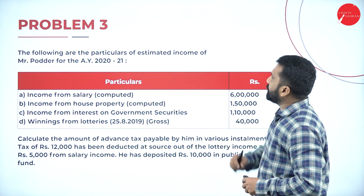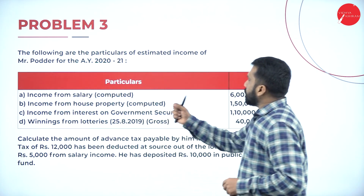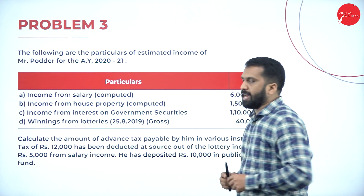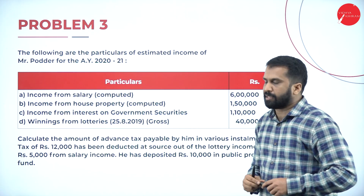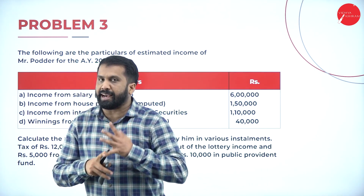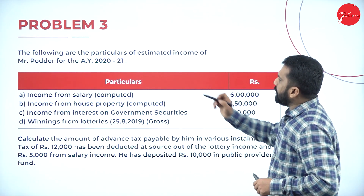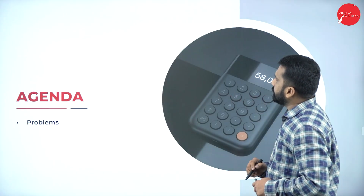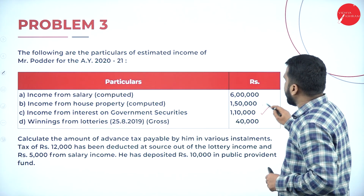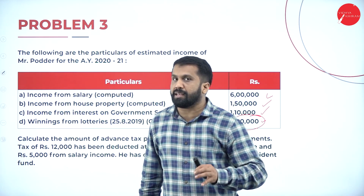Problem number three: the following are the particulars of estimated income of Mr. Podar for the year ended 2020-2021. Income from salary (computed): six lakh. Income from house property: computed. Income from interest on government security: one lakh ten thousand. Winning from lotteries (gross value): forty thousand - remember, separate calculation at thirty percent applies. Winning from horse race: forty thousand - also to be calculated separately.